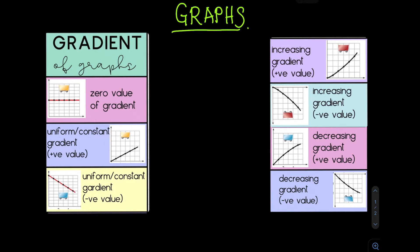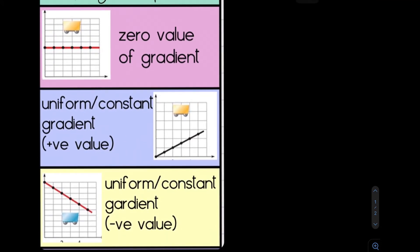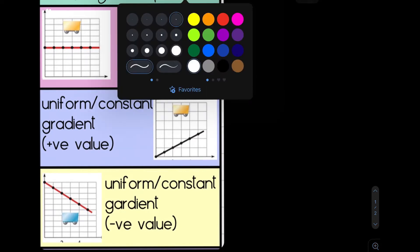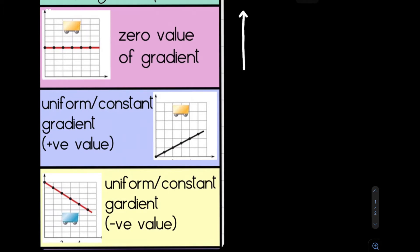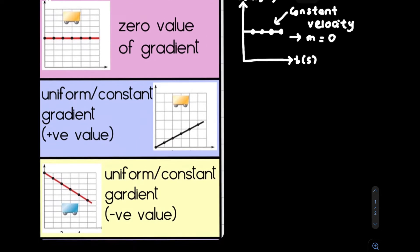Before we go further, let's recap how to determine the gradient of a graph from different shapes. The first graph shows a car moving with constant velocity on a velocity-time graph. The y-value is the same at any time t, which means this is constant or uniform velocity. The gradient of this graph equals zero — you take the y-value divided by the t-value and get zero.